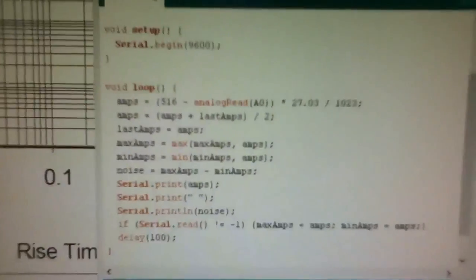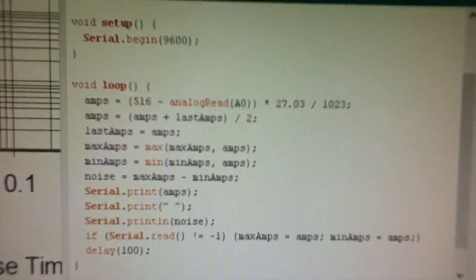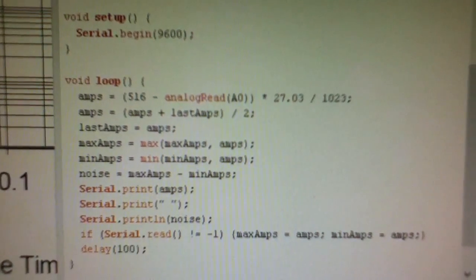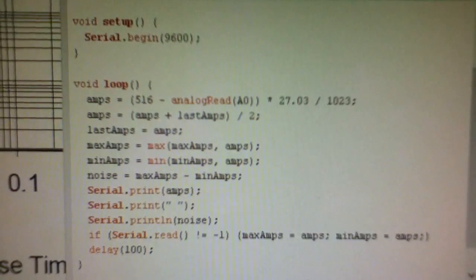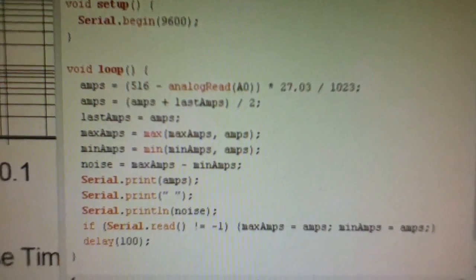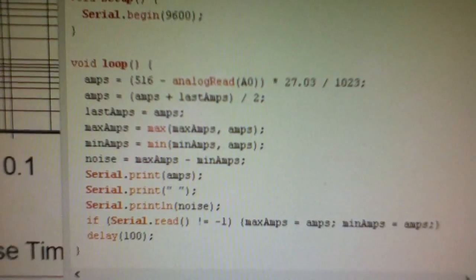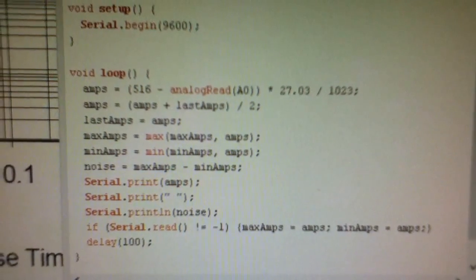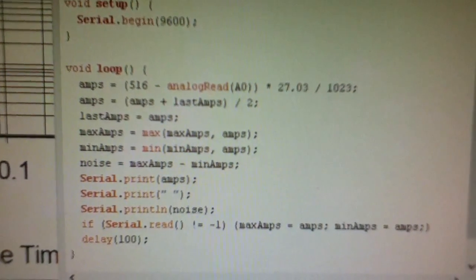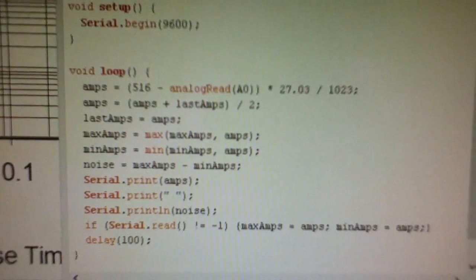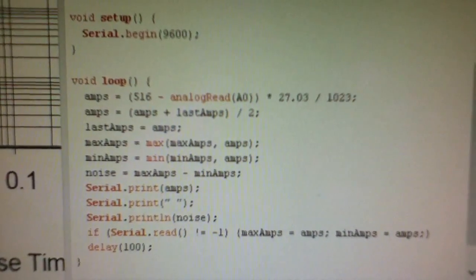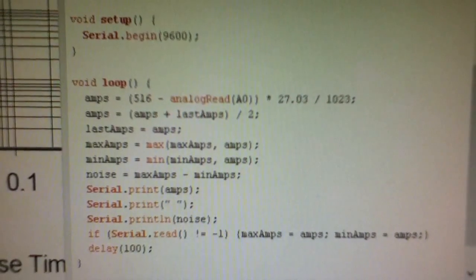I was wondering whether I could get that number even lower by doing a bit of digital filtering. If you look at the second and third lines in the loop function: amps equals amps plus last amps divided by 2, last amps equals amps. That's just simple averaging - taking the current amps value, adding it to the previous amps value, dividing by 2.